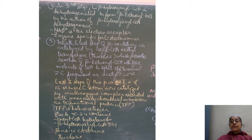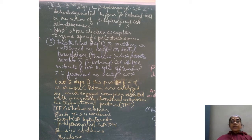This multi-enzyme complex is called the trifunctional protein (TFP). TFP is a hetero-octomer. Each alpha subunit contains two enzyme activities: enoyl-CoA hydratase and beta-hydroxyacyl-CoA dehydrogenase, while the beta subunit contains thiolase activity.